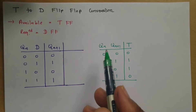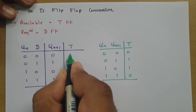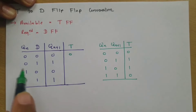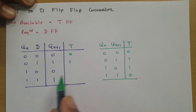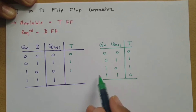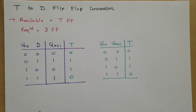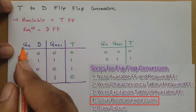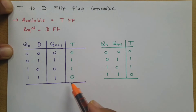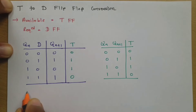Now we place these excitation table values into the characteristic table. Where Qn and Qn+1 are 0 and 1, T equals 1. Where Qn and Qn+1 are 1 and 0, T is also 1. Once we place these values, we simplify the Boolean expression. The T values 0, 1, 1, 0 with respect to Qn and D directly suggest an XOR operation, so we can say T equals Qn XOR D.